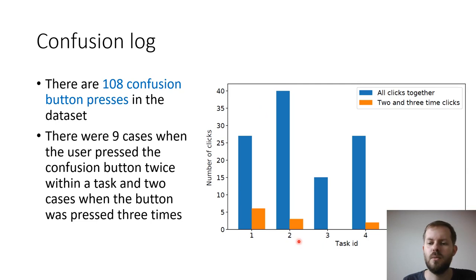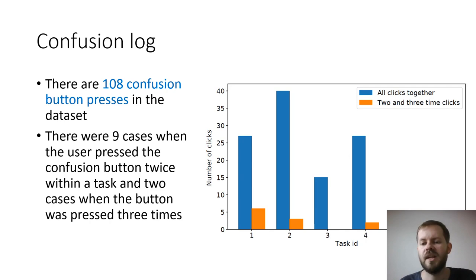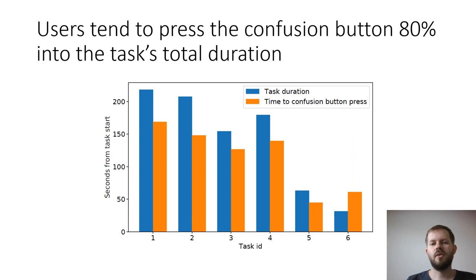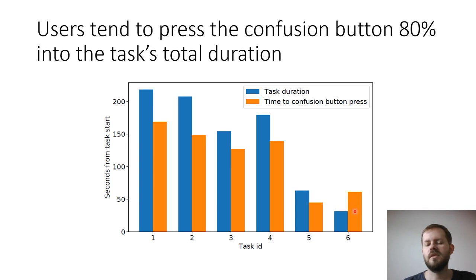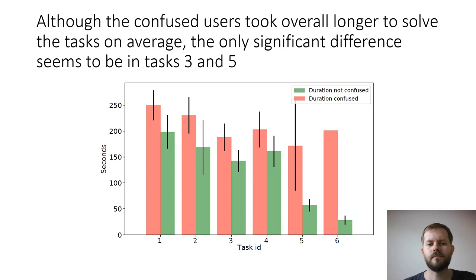The most problematic task turned out to be task two, which was a newly added functionality, followed by tasks one and four. Task one was identified as problematic by customer service, while task four was supposed to be typical common user behavior — so it's surprising it caused so many problems, possibly due to task complexity. Users tended to press the confusion button about 80% into the task's total duration.